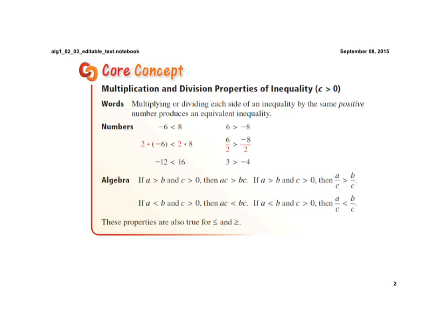For example, if negative 6 is less than 8, and we multiply both sides by 2, as we're doing right here, then we go ahead and 2 times negative 6 is a negative 12, and 2 times 8 is 16, and we still have a negative 12 is less than a positive 16. And if 6 is greater than a negative 8, and we divide both sides by 2, we get 3 is greater than a negative 4, which is an equivalent inequality.